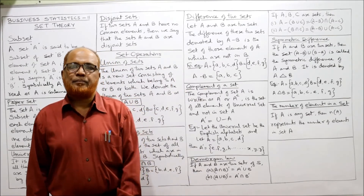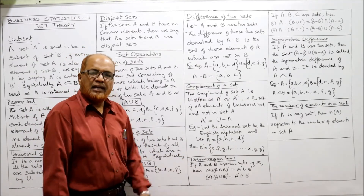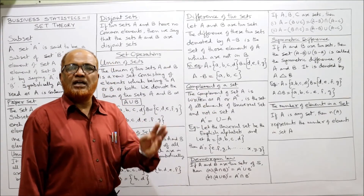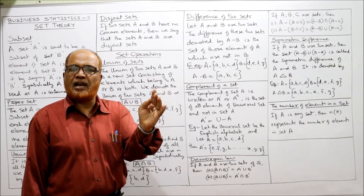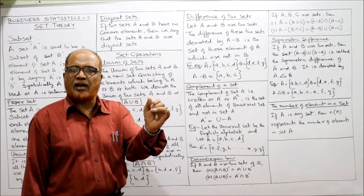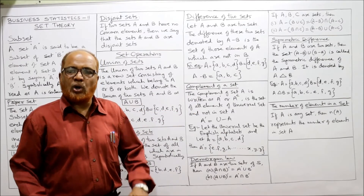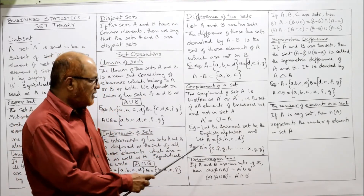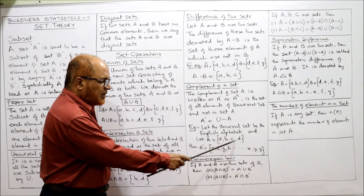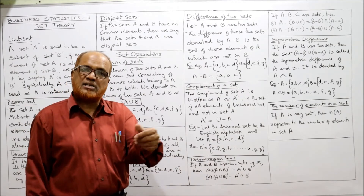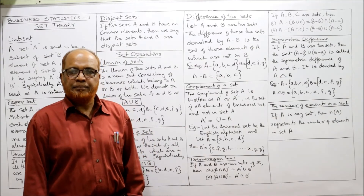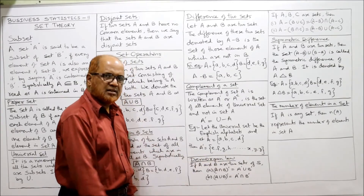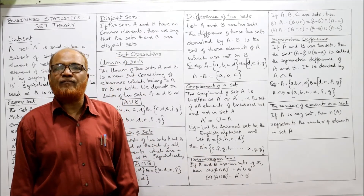Leaving A, B, C, D, the remaining elements are E, F, G, H, I, J, K, L, M, N, O, P, Q, R, S, T, U, V, W, X, Y, Z. So A complement = {E, F, G, H, ... up to Z}. All elements of the universal set except A, B, C, D. That is called complement of A.